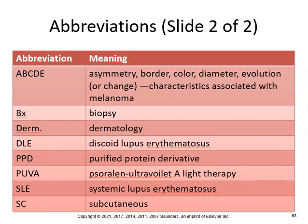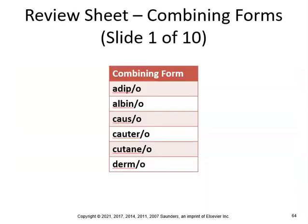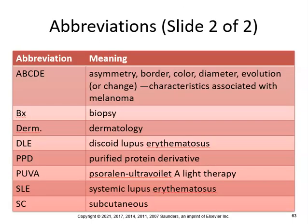ABCDE is the way we diagnose skin cancer — asymmetry, border, color, diameter, and evolution (change characteristics associated with melanoma). BX is biopsy. Derm is dermatology. DLE is discoid lupus erythematosus. PPD is used for tuberculosis — purified protein derivative. PUVA is psoralen plus ultraviolet A light. SLE is systemic lupus erythematosus. SubQ is subcutaneous. And that's it.